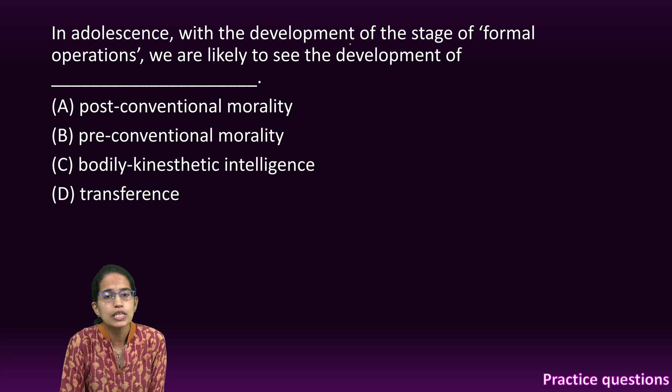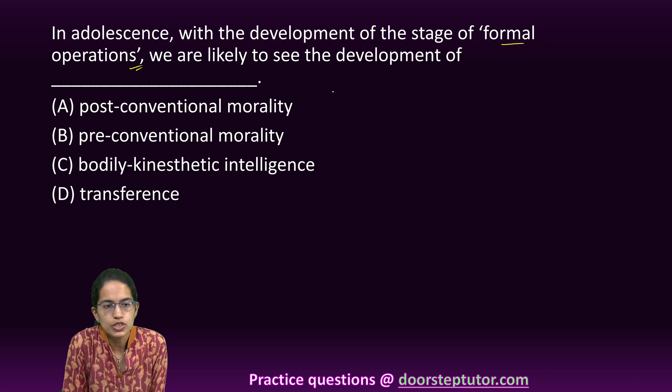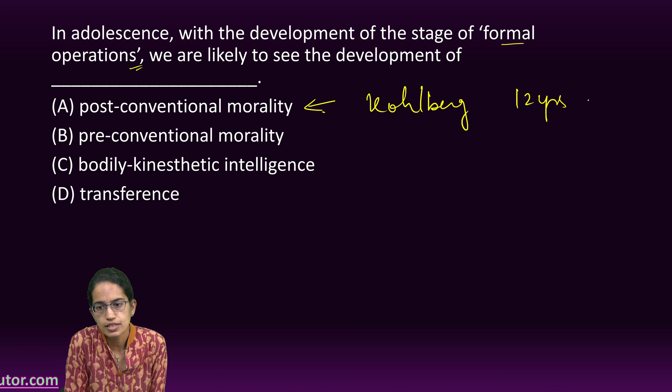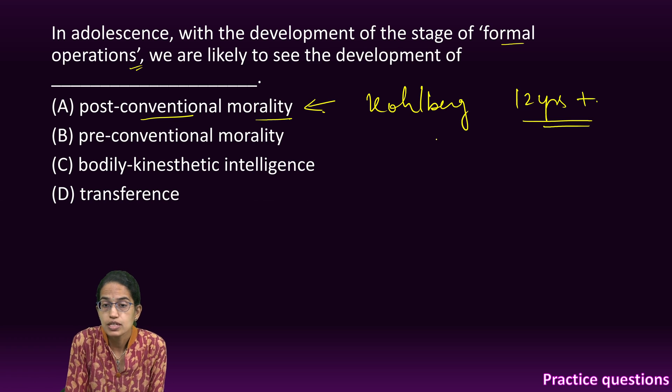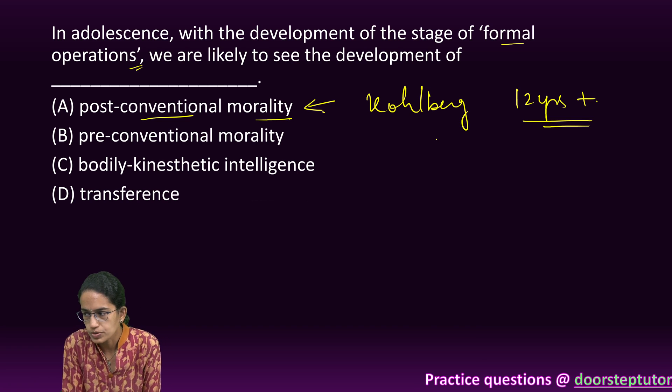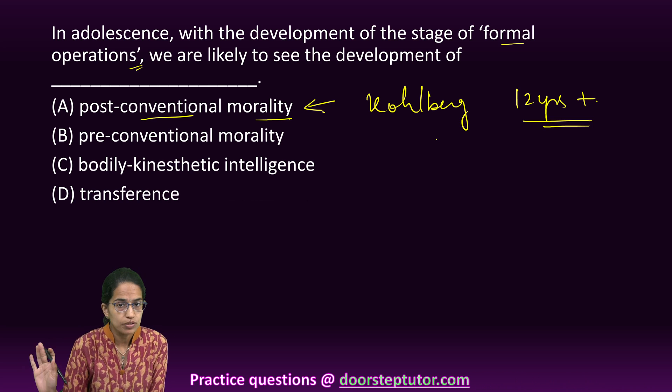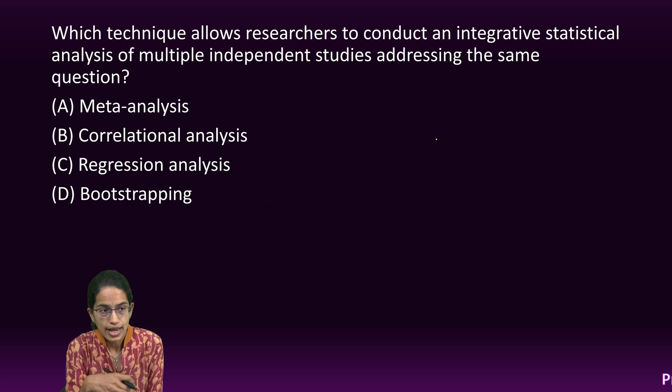In adolescence, with the development of the stage of formal operations, we are likely to see the development of post-conventional morality. Now, this has been explained under Kohlberg's theory. Children with the age of 12 years and plus fall under this category of post-conventional morality. And here, it is the morality which is determined by experiences and the judgment of a person, even if the person disagrees with the common rules of the society. That is what is known as the stage of post-conventional morality.